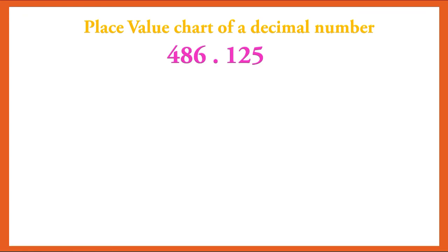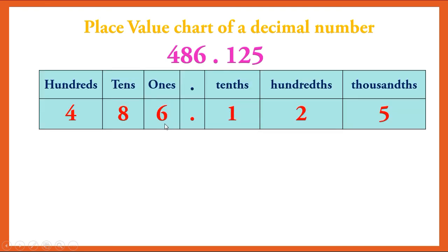Now we are going to look at the place value chart of a decimal number including tenths, hundredths, and thousandths. A number is given: 486.125. The place value of 6 is ones, 8 is tens, and 4 is hundreds. Then we have a decimal point. After the decimal point, the place value of 1 is tenths, 2 is hundredths, and 5 is thousandths.